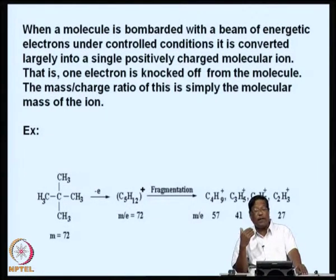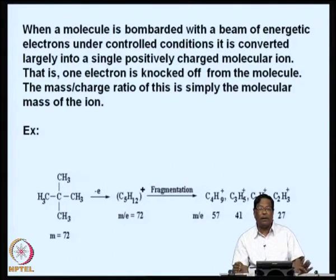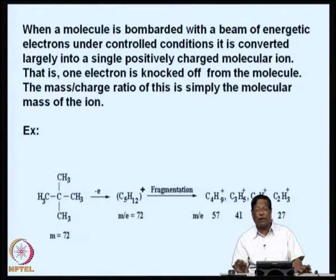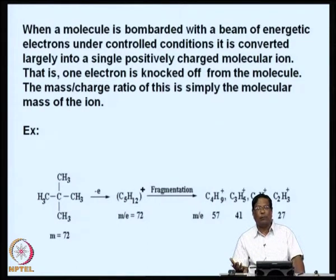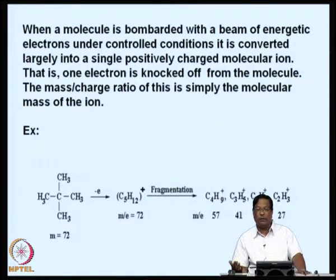When a molecule is bombarded with a beam of energetic electrons under controlled conditions, it is converted largely into single positively charged molecular ions. One electron is knocked off from the molecule; the mass does not change because the mass of an electron is about 1/1845 times less than that of a proton. The loss of an electron does not result in any substantial change in the mass of the molecule, and because it is an ion owing to the loss of an electron, we call it the molecular ion.